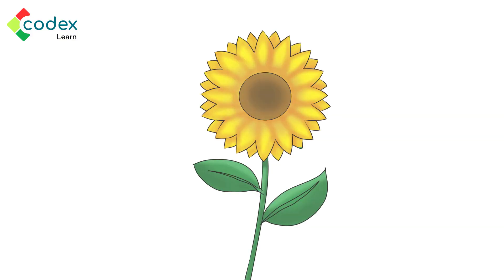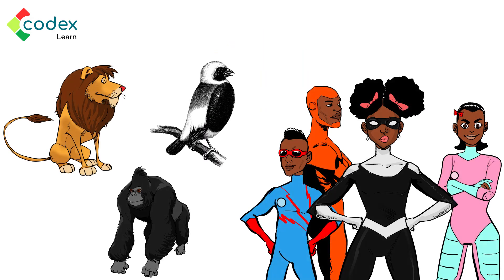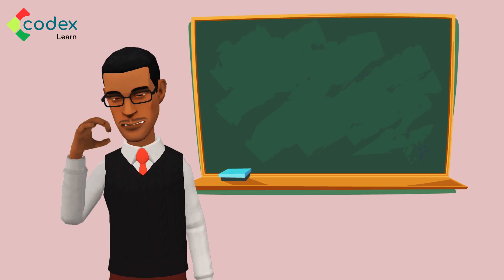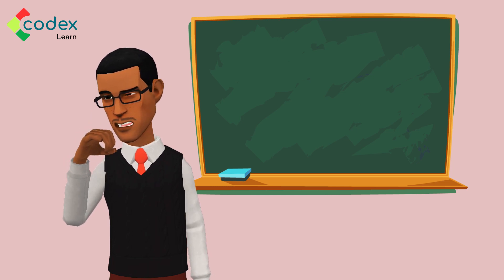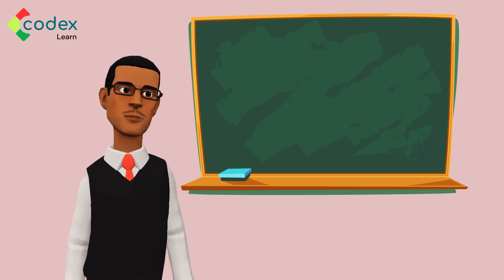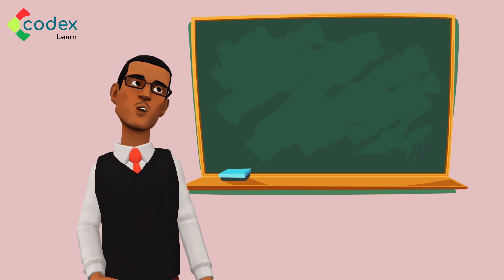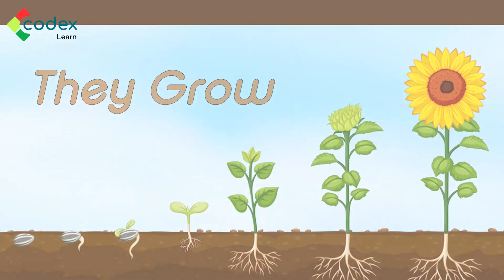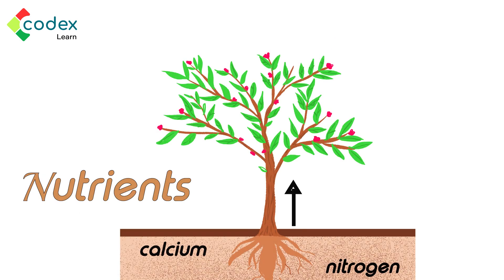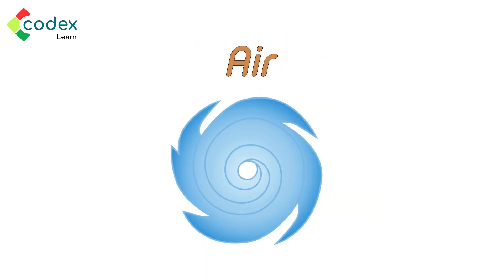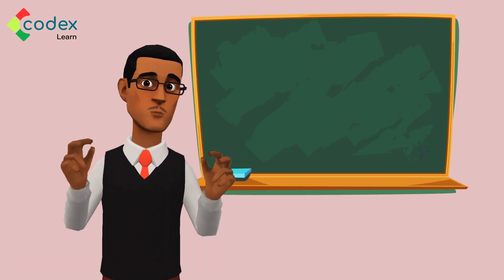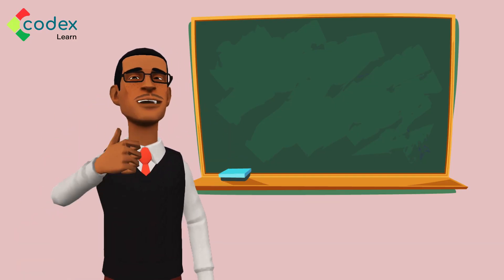Let's begin. Plants are alive, just like people and animals. But how can we tell that this is true? It's simple. Things that are alive do some things to show that they are truly alive. For example, they grow and die. They need energy, nutrients, water and air. They respond to what is around them. Let's look further into these examples, shall we? Great.